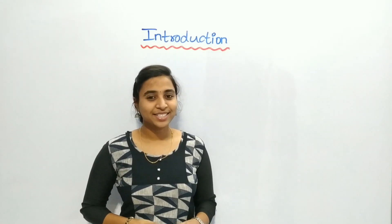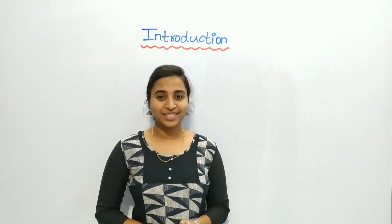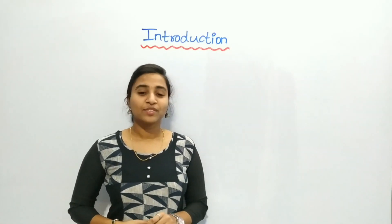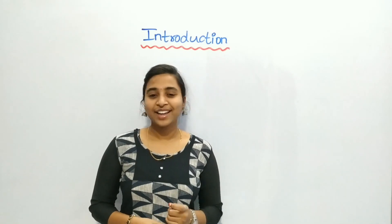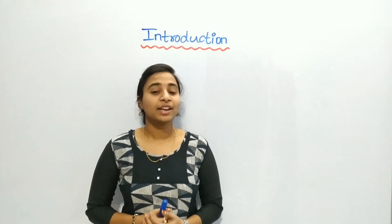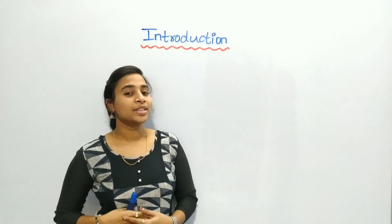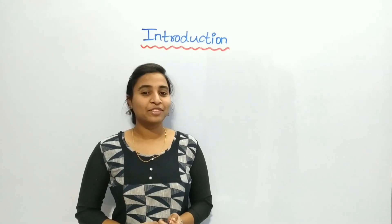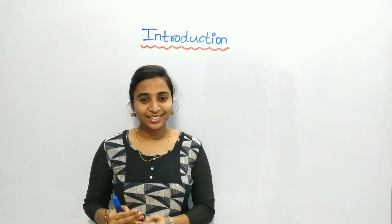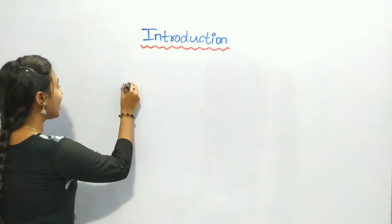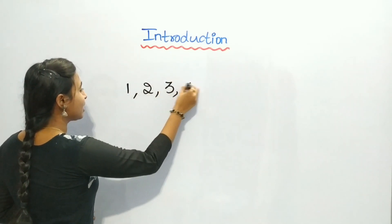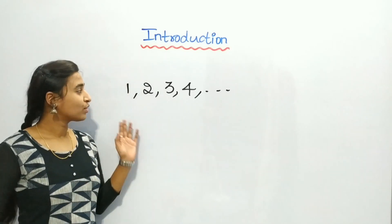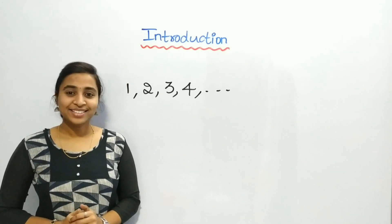Let us start Chapter 2: Whole Numbers, with the first topic: Introduction. Generally, we call numbers 1, 2, 3, 4 and so on. They come naturally when we start counting. So, some mathematicians call them natural numbers because they come naturally when we count — 1, 2, 3, 4. That is why we call numbers from 1 to infinity as natural numbers.